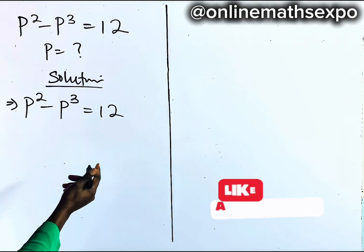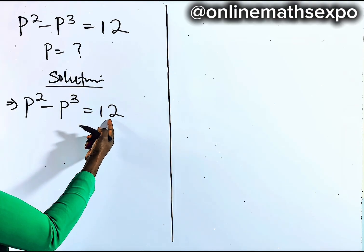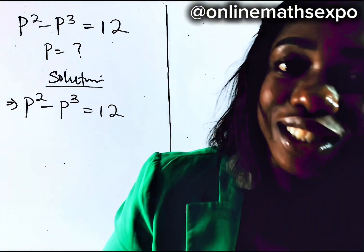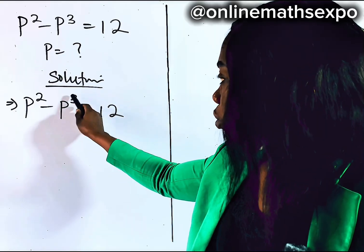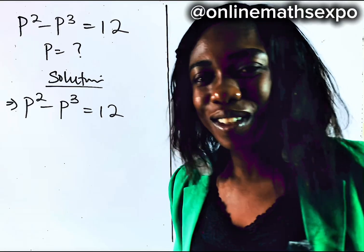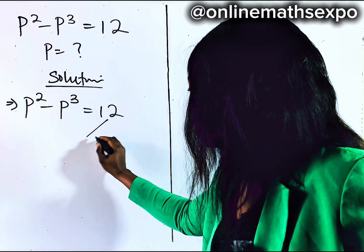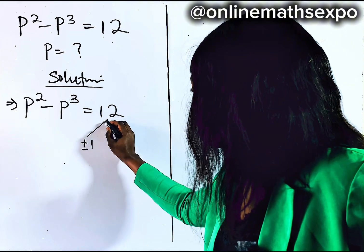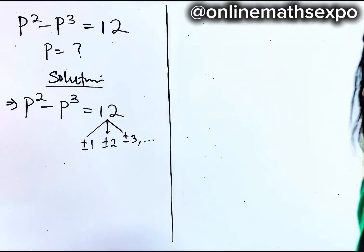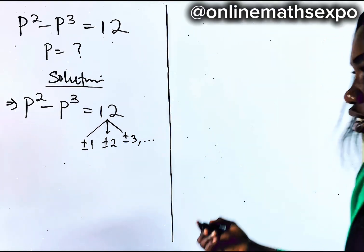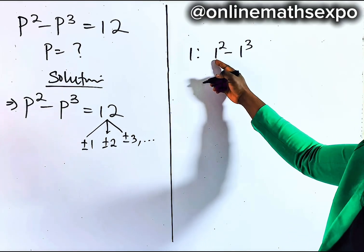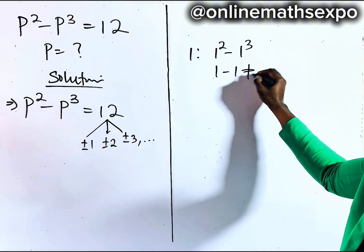What we do now is: can we get numbers from the factors of 12, both positive and negative, such that when we square this number and then cube it, subtract the two results, it gives us 12. The factors include plus or minus one. Let's check for when P equals one. We have one squared minus one cubed, which gives one minus one — that is not equal to 12.